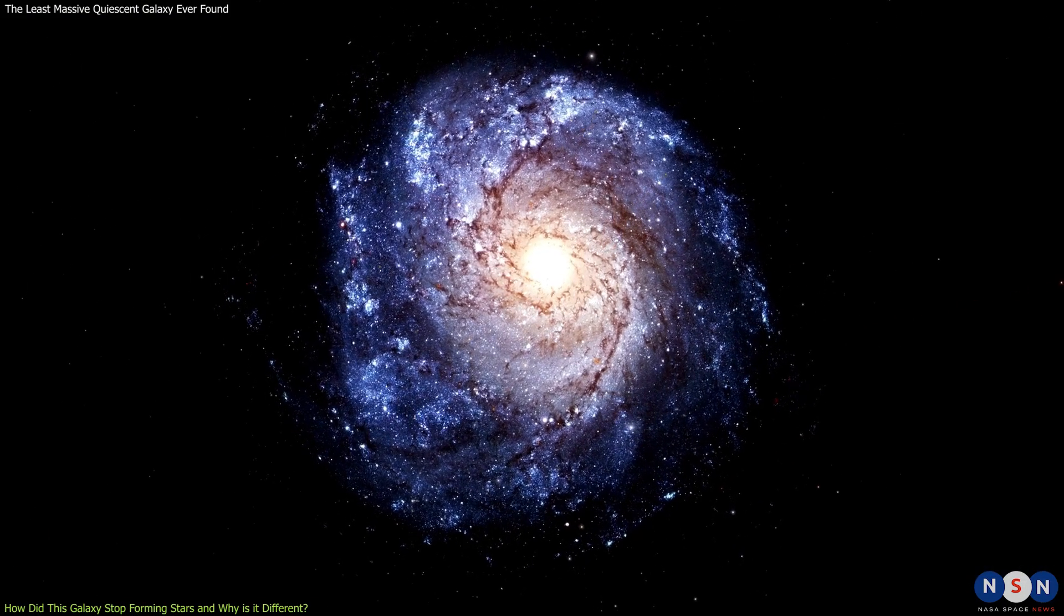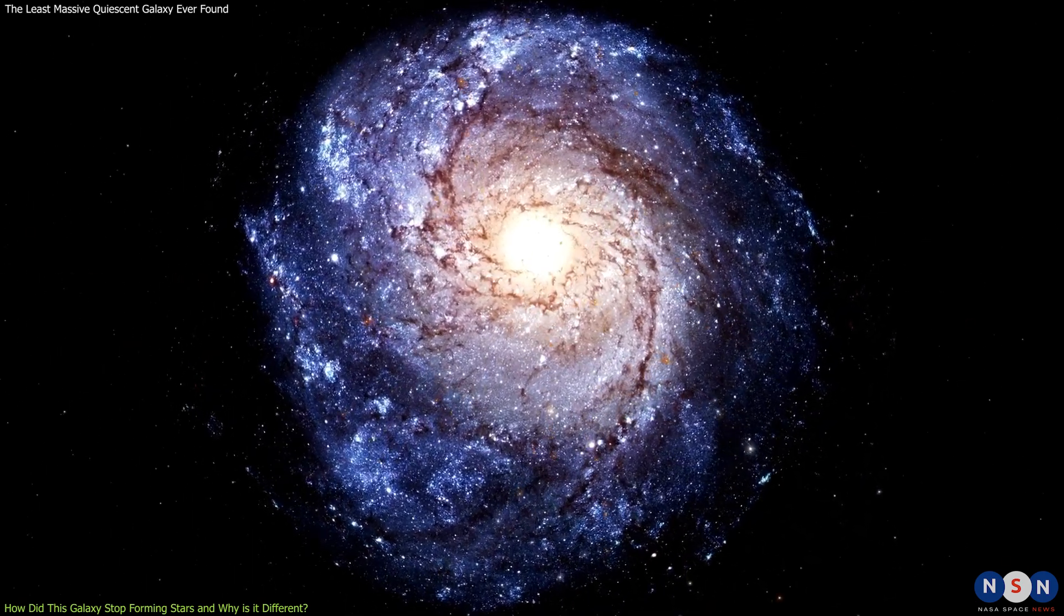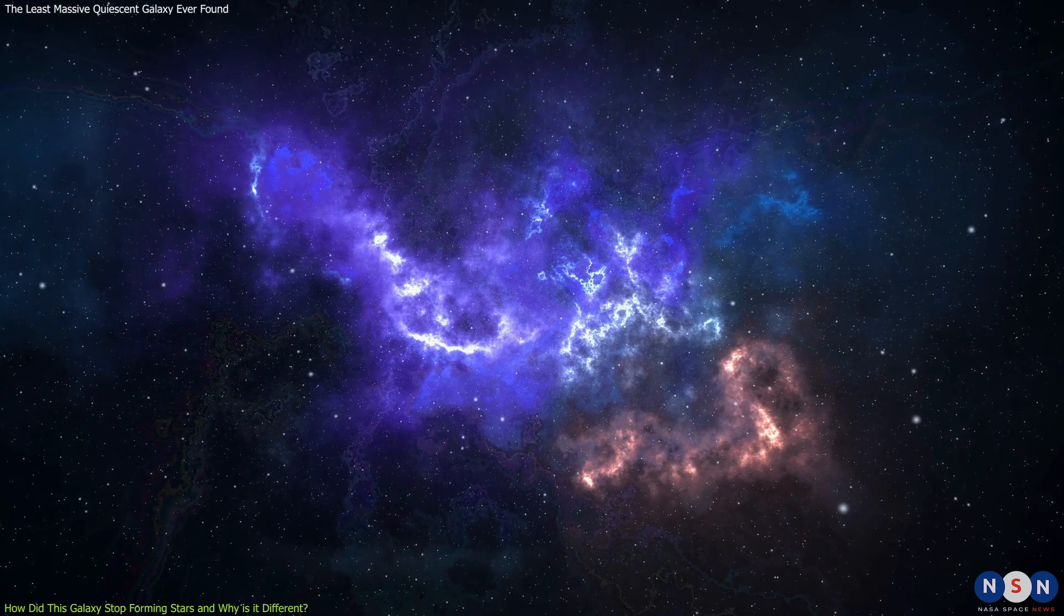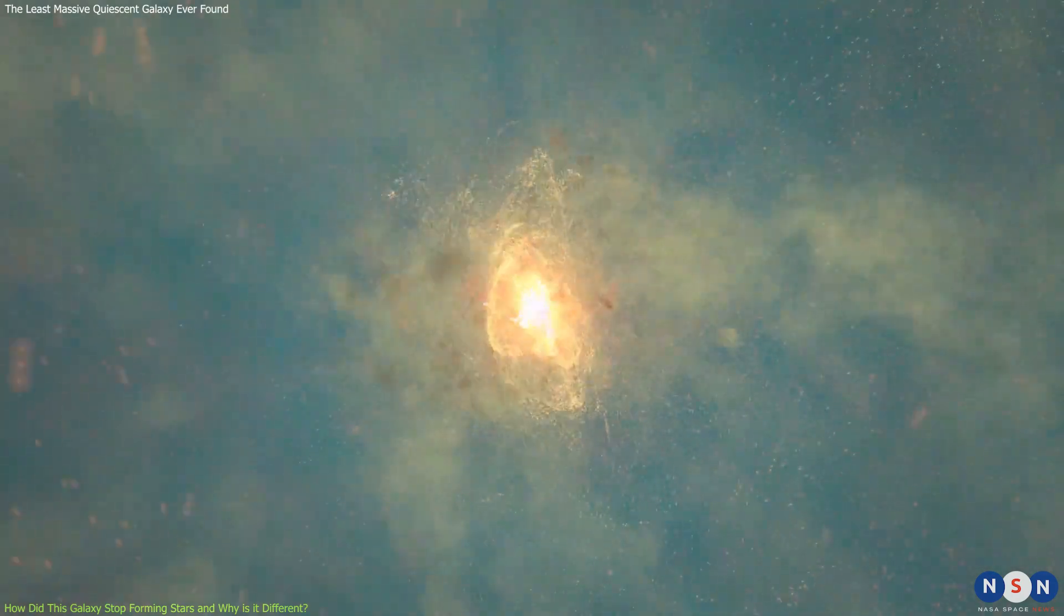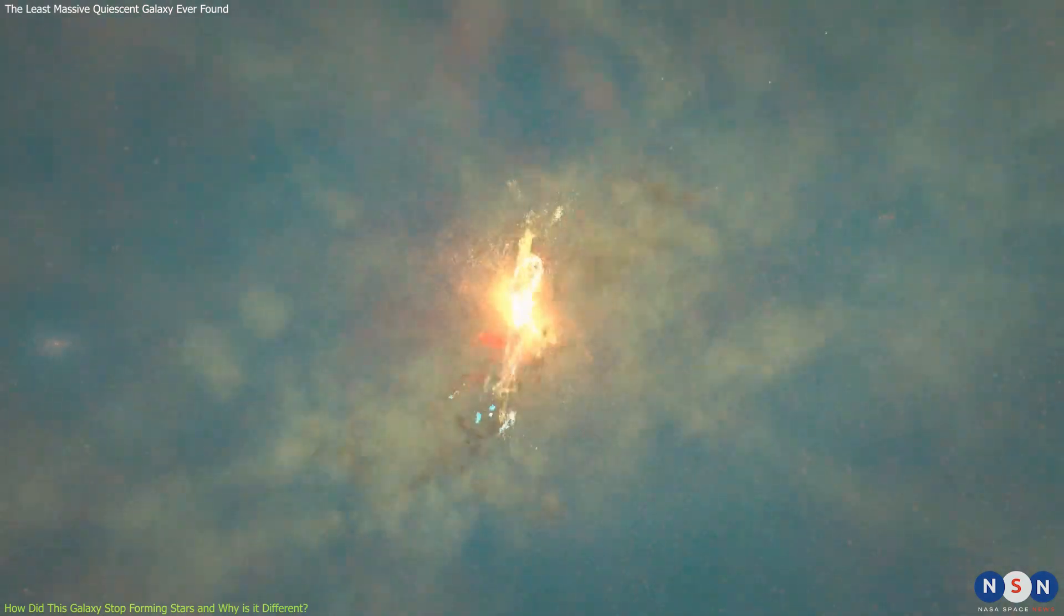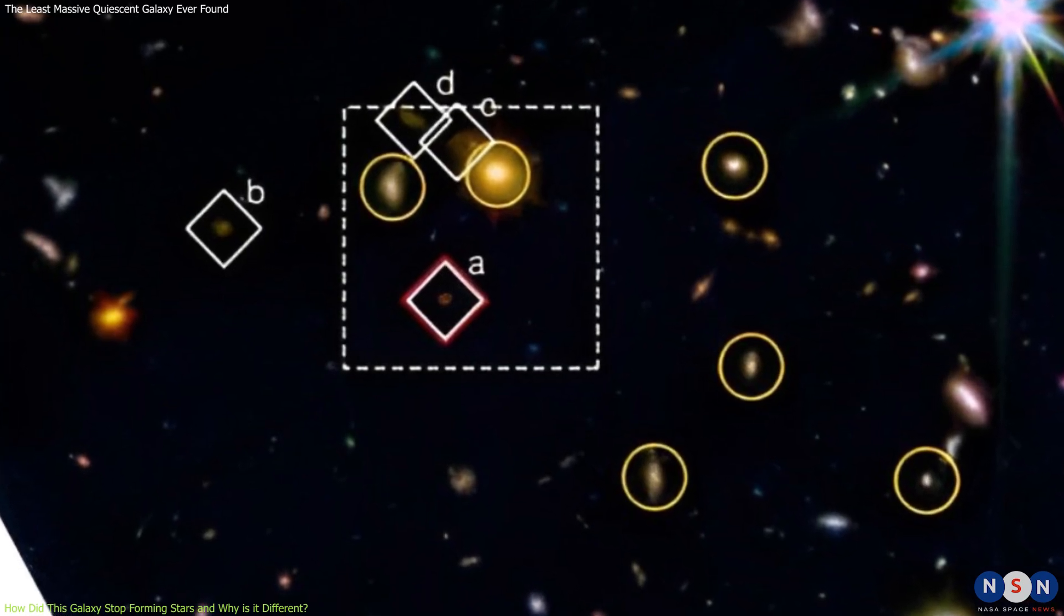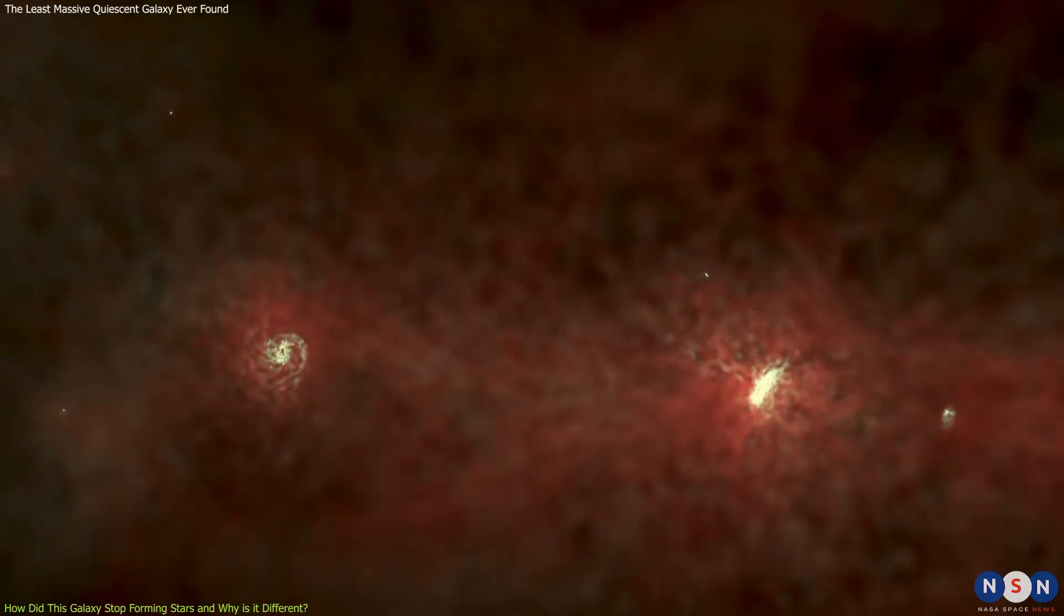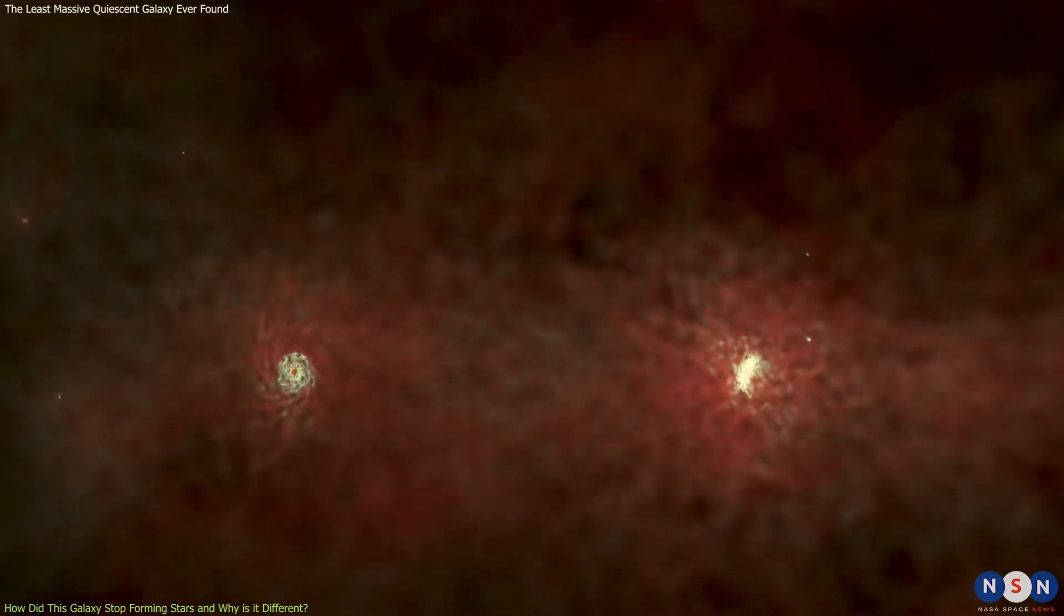Another possible explanation is that this galaxy was born quiescent, meaning it never formed many stars to begin with. This could happen if the galaxy formed in a region of low gas density or high metallicity, which are factors that can inhibit star formation. However, this scenario is also very rare and unlikely, because it requires very special and fine-tuned initial conditions for the galaxy to form in such an environment. Therefore, this galaxy remains a mystery for astronomers, who are still trying to figure out how it got quenched and why it is so different from other quiescent galaxies, which opens up new possibilities and challenges for our understanding of galaxy formation and evolution in the early universe.